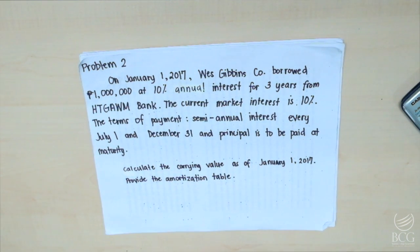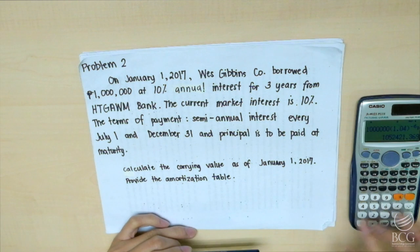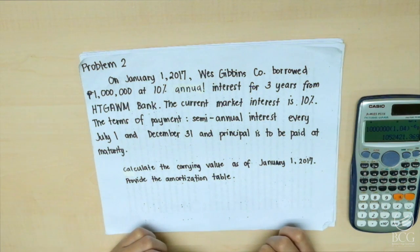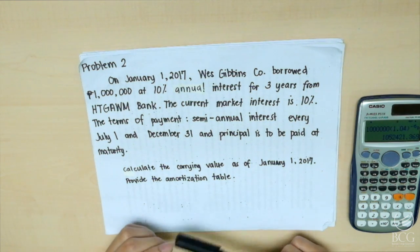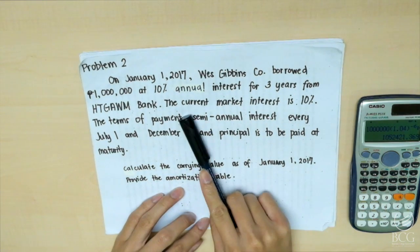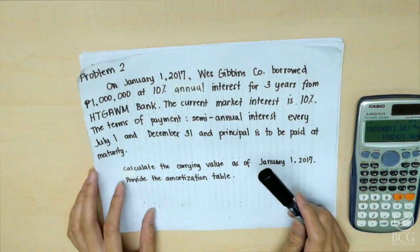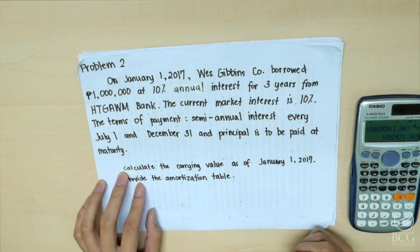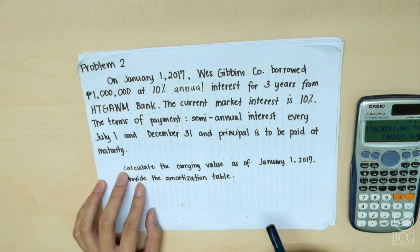On January 1, 2017, West Gibbons Company borrowed 1 million at 10% annual interest for 3 years from a bank. The current market interest rate is 10%. The terms of payment: semi-annual interest every July 1 and December 31, and principal is to be paid at maturity. We are given the same structure but different rate — the nominal rate and the effective rate are the same, both 10%. So let's expect that the amortization table at the end will show zero amortized cost, and that the interest and cash payment will also be the same, except for maturity since it includes the principal.